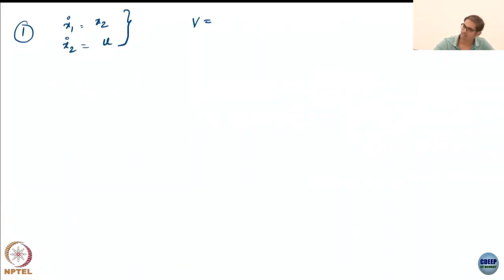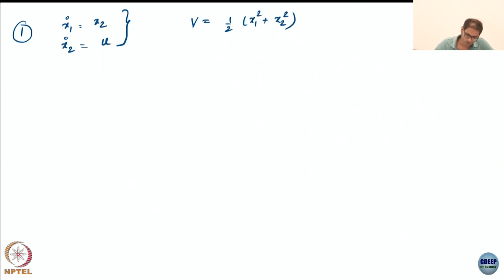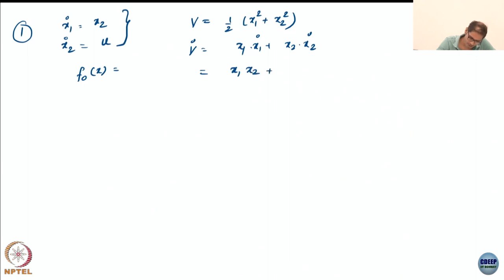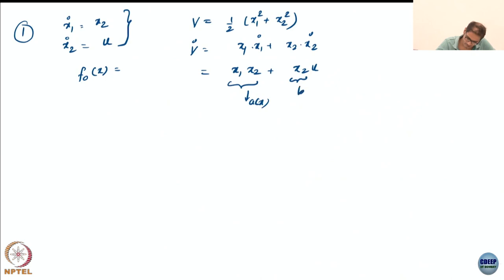Let us try the simple candidate V = ½x₁² + x₂². So what do we do? We try to find the drift vector field. There is a quick way: compute V-dot directly. You get x₁·x₁̇ + x₂·x₂̇, which is x₁x₂ + x₂·u. So whatever multiplies u is b(x), and the rest is a(x). This is the quick way — every time you see this expression, you can read off a and b directly.